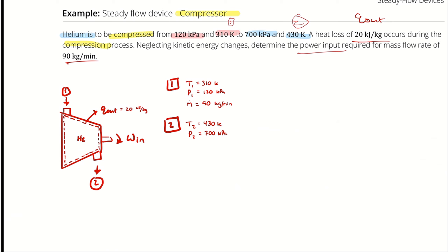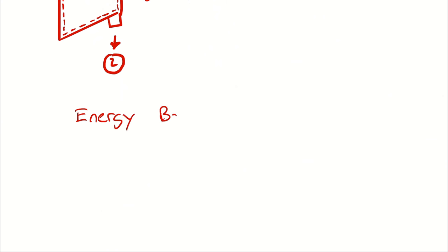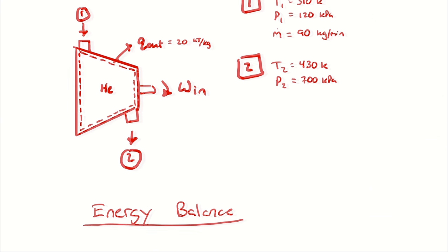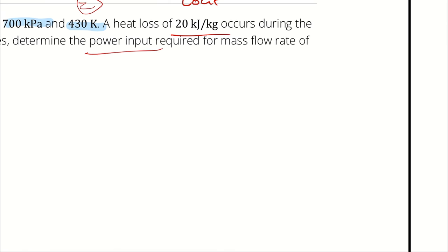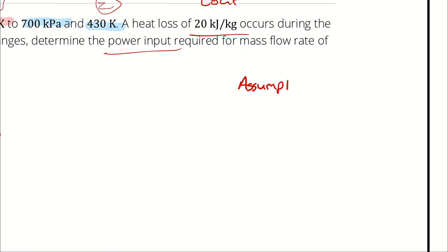I'm looking for a power input, which implies I'm going to use an energy balance to relate how the enthalpy increase corresponds to the power input. My energy balance is on the control volume, which is an open system, so I have to account for energy crossing the boundary as heat, work, or the energy associated with a moving mass. I'm also treating this as steady state, which means I'm neglecting the effects of time — the compressor is assumed to be fully warmed up and running steadily, so the temperatures at the inlet and outlet don't change.